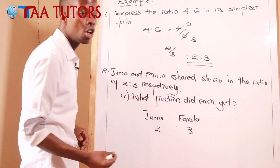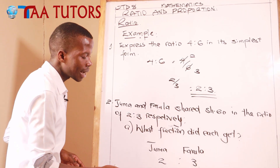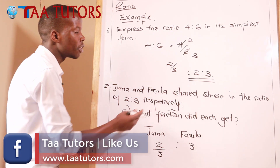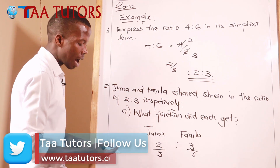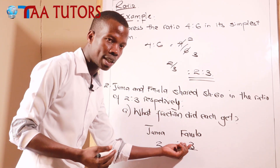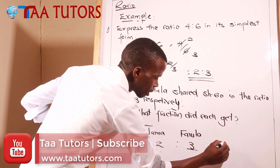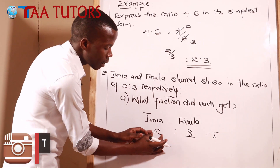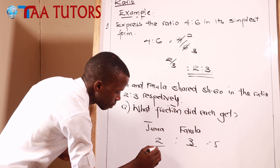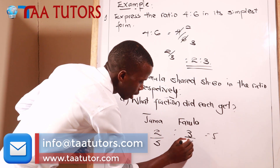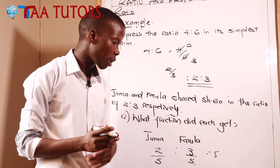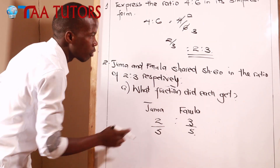To find the total fraction, you add the two ratio parts together: 2 plus 3 gives 5. So the total fraction is 5. That means Juma got 2 over 5 of the money, and Farola got 3 over 5 of the money. The first step is always to get the total fraction - here it is 5 - then determine each person's fraction.